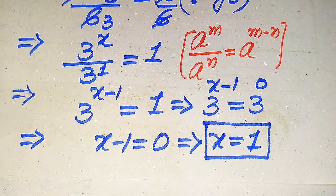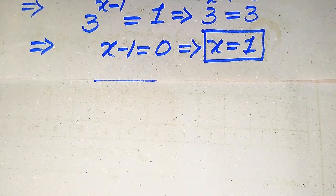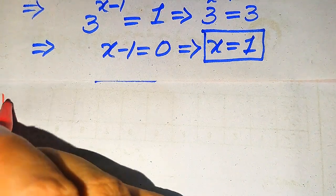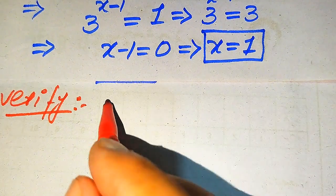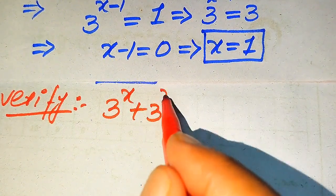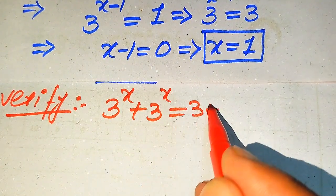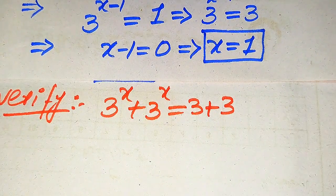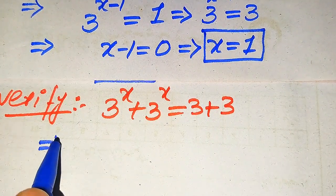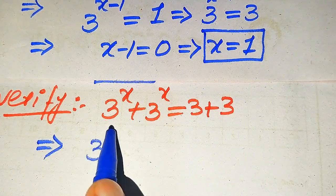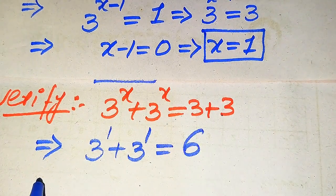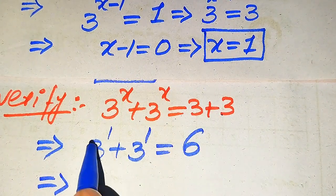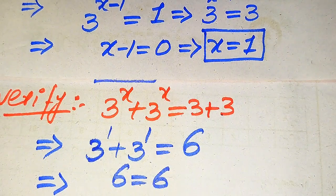From the second method we again get x equals 1. Now in the next step we verify this value of x. For verification, the given question statement is: 3 to the power of x plus 3 to the power of x equals 3 plus 3. We substitute x equals 1 into the left hand side: 3 to the power of 1 plus 3 to the power of 1 equals 3 plus 3, which gives 6 equals 6.